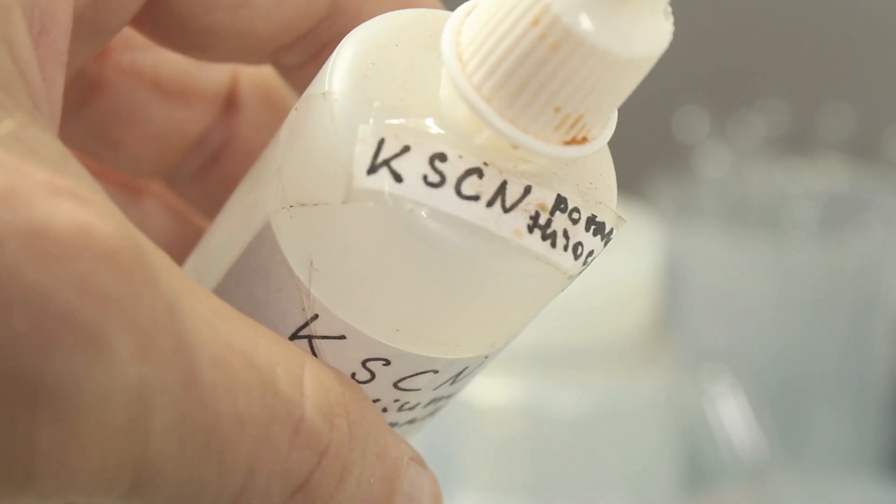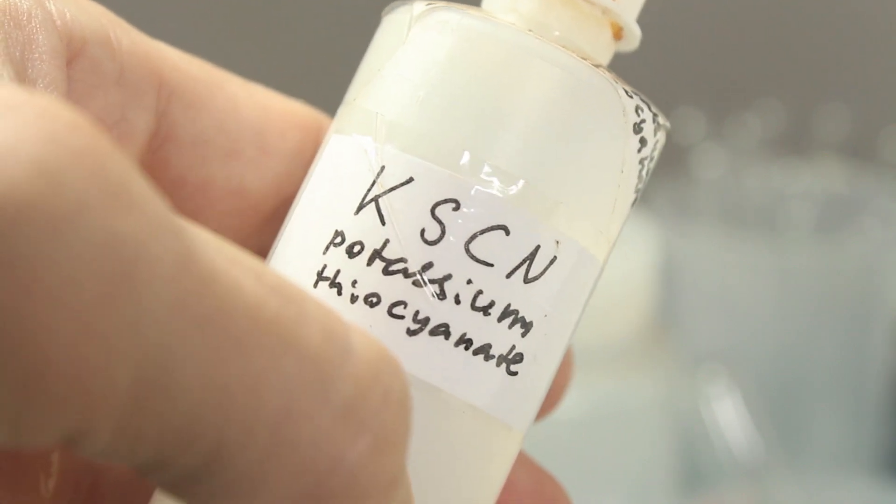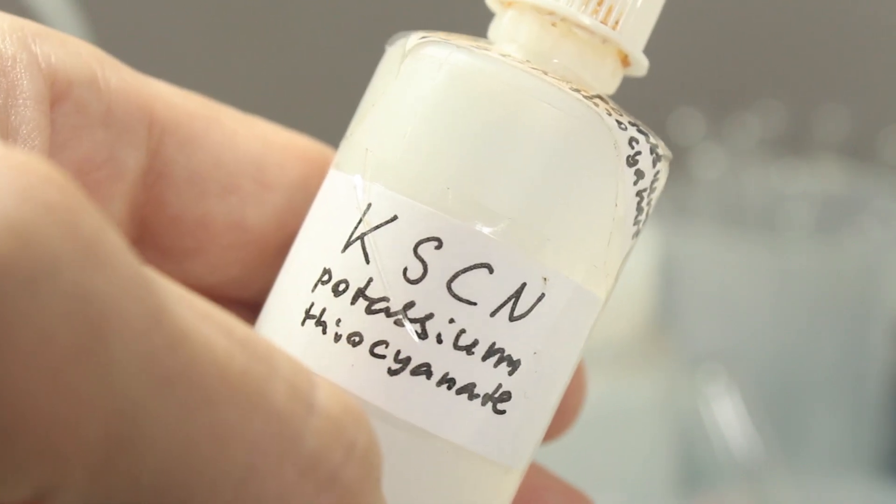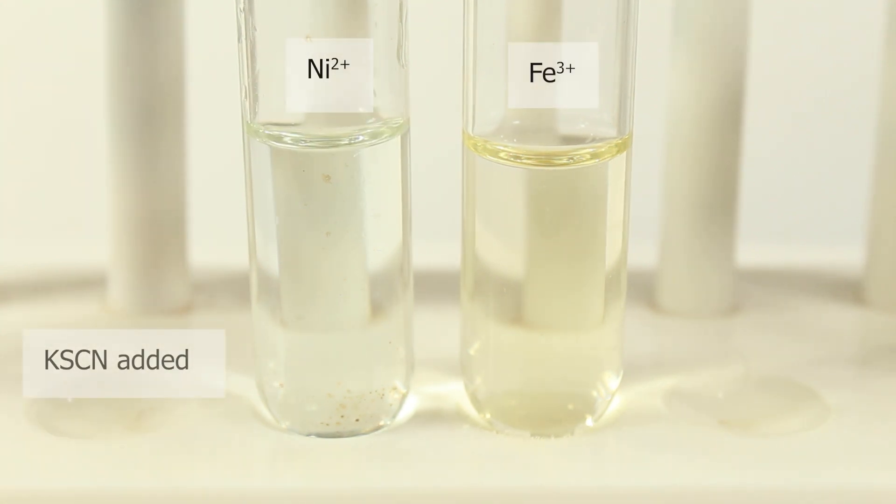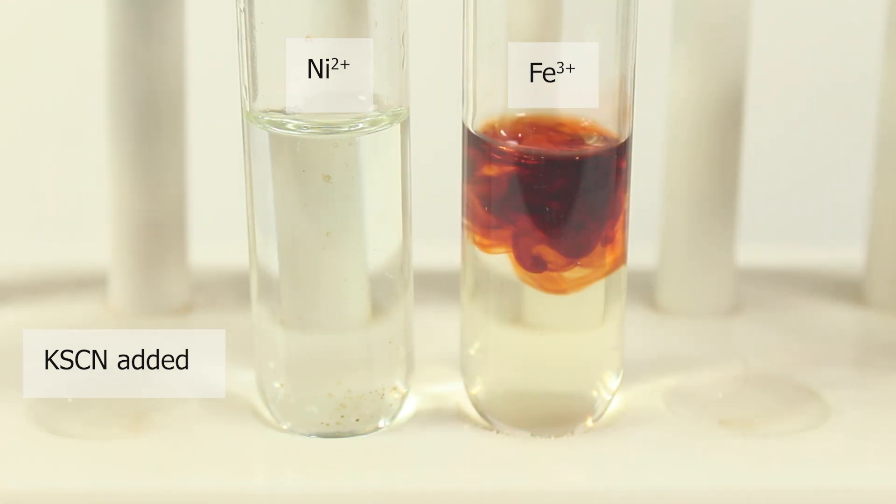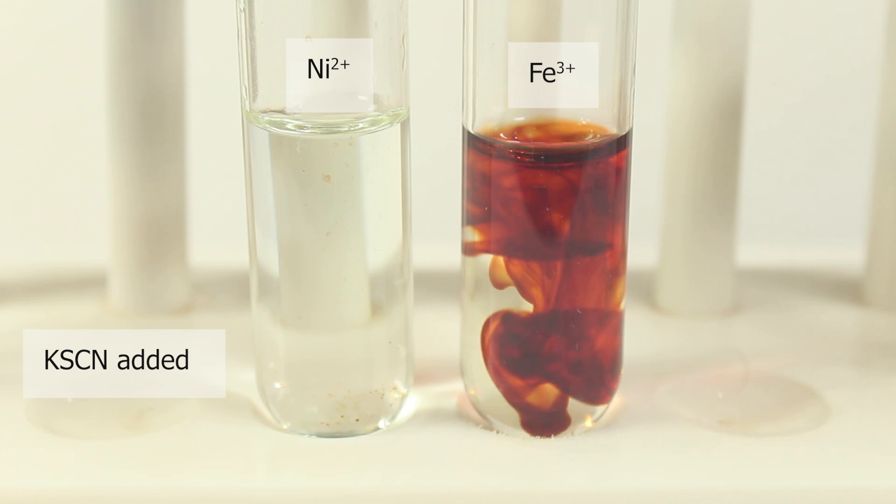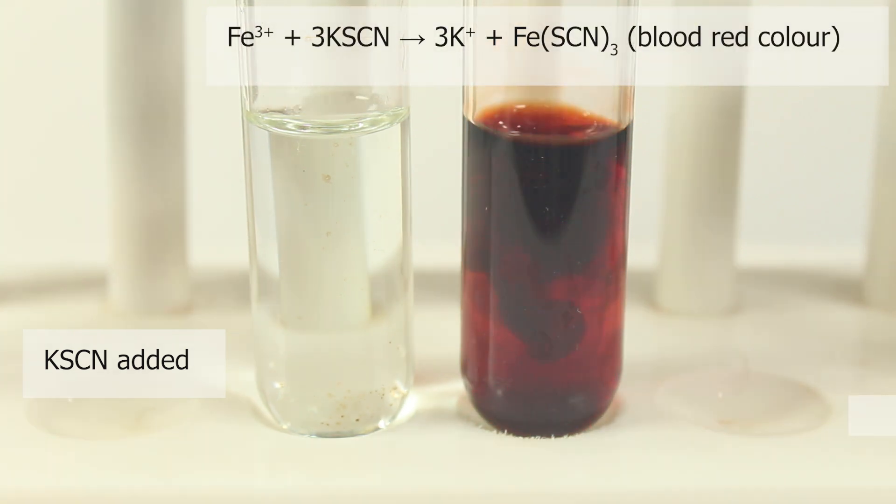Nickel, again, is used for control. Potassium thiocyanate. Adding to nickel ions. Nothing happens. Blood red precipitate in case of iron-3. In case of iron-3 thiocyanate.